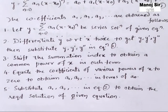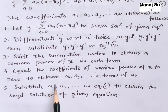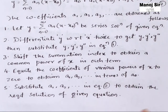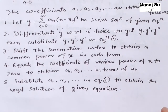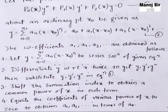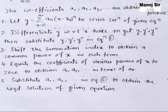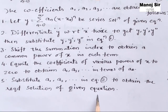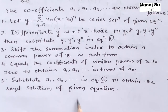Step 5: After finding the values a1, a2, a3, etc., substitute them into equation (2). This gives the required solution of the given power series equation. Whatever we obtain in terms of those coefficients will be the required solution.